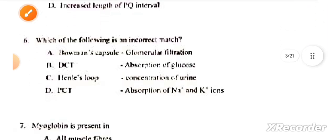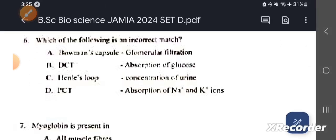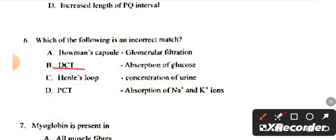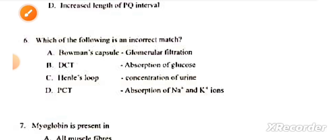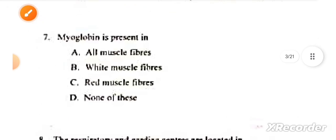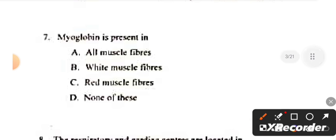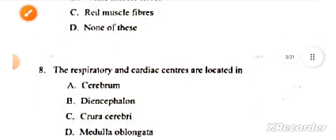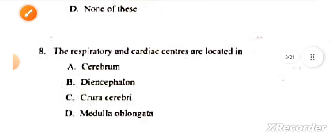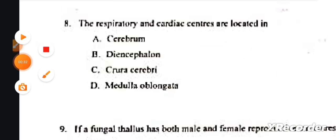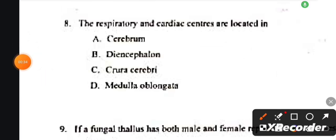Next: Which of the following is an incorrect match? This answer is B — DCT, absorption of glucose. Next: Myoglobin is present in? This answer is A, all muscle fibers. Next: The respiratory and cardiac centers are located in? This answer is D.